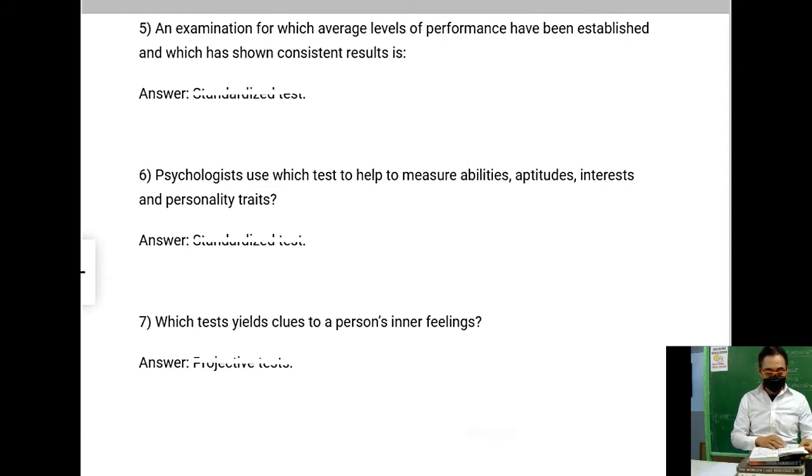Number five: An examination for which average levels of performance have been established and which has shown consistent results is called? Number six: Psychologists use which test to help to measure abilities, aptitudes, interests and personality traits? Number seven: Which test yields clues to a person's inner feelings?